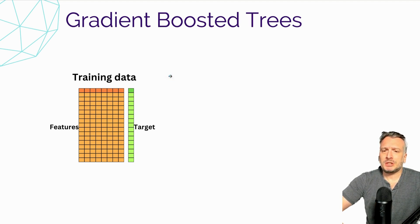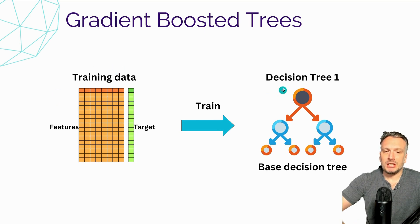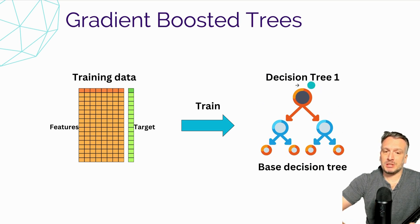The gradient-boosted tree algorithm is an iterative process. First, we use the training data and we train an initial decision tree. We're going to call this the base decision tree. This is a very simple tree and we're going to iterate to correct the mistakes that this tree is making.